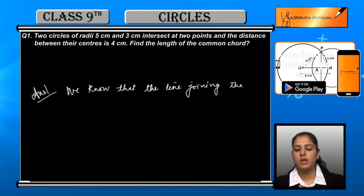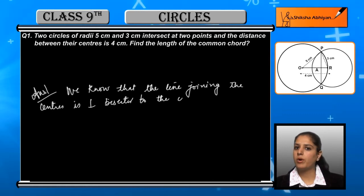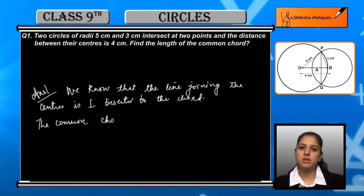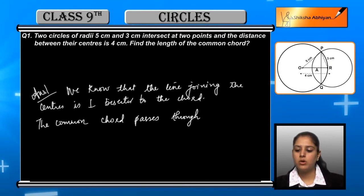We call the common chord PQ. It passes through both the circles. If we look at both the circles, they intersect at two points we call P and Q. Join them to form the common chord which passes through the centers of both circles.